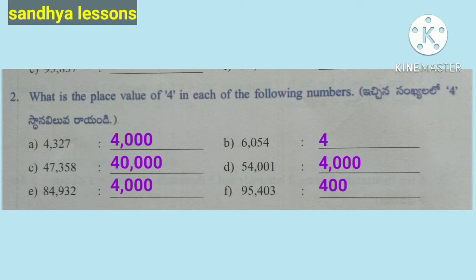Place value of 4 in 54,001: 4 is in the thousands place, so 4 × 1,000 = 4,000. Place value of 4 in 84,932: 4 is in the thousands place, so place value is 4,000. Place value of 4 in 95,403: 4 is in the hundreds place, so 4 × 100 = 400.